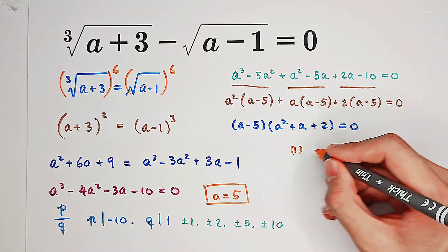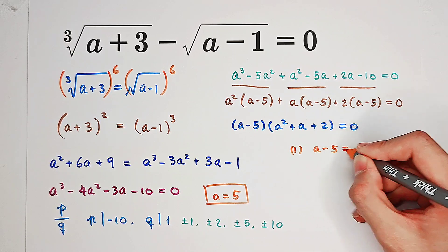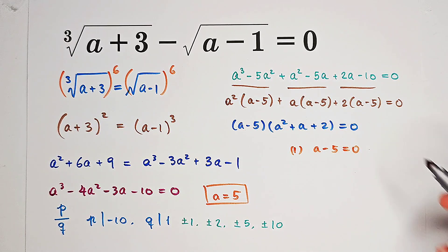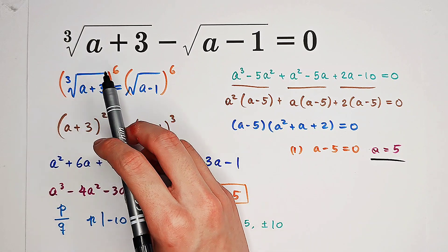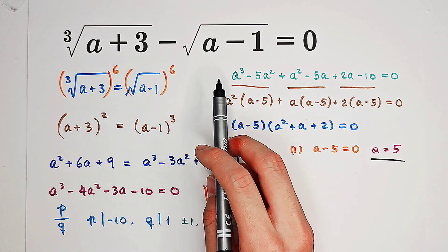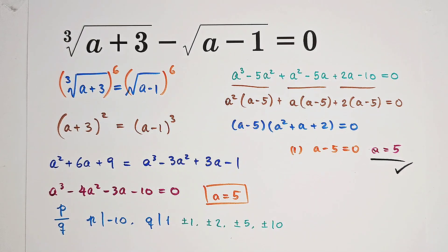So I have two possibilities. If a minus 5 equals 0, which means a equals 5, we can get, yes, a is just equal to 5. If we check this route, we get 2 minus 2 equals 0. So perfect.